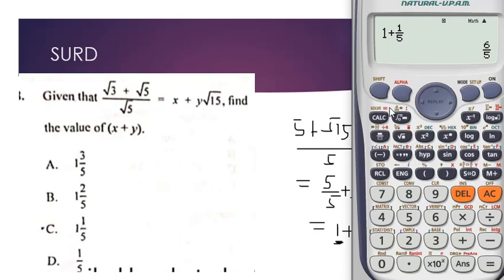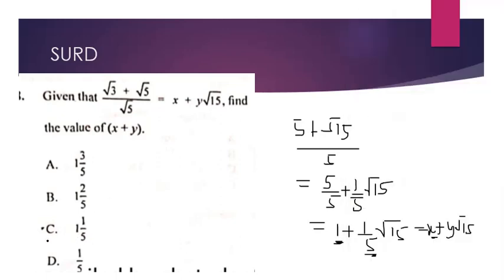Six over five is the same as one whole number one over five. To confirm the mixed fraction form of the answer, just click shift and then click that button and it gives you one and one over five. So the answer is C. You see how simple this is — let's move on to the next question.